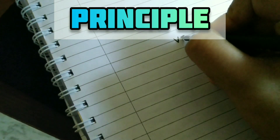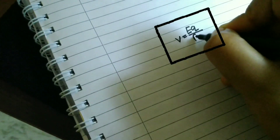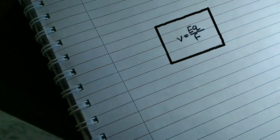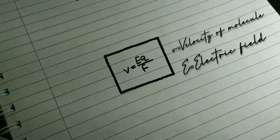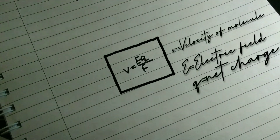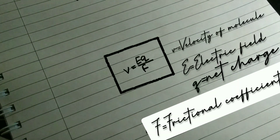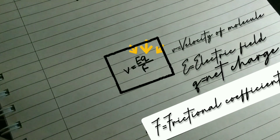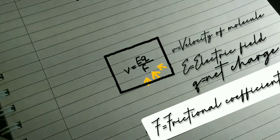In electrophoresis, the movement in a medium subjected to an electric field is represented by the equation: V = EQ/F, where V is the velocity of the molecule, E is the electric field, Q refers to the net charge on the molecule, and F represents the frictional coefficient, which depends on the mass and shape of the molecule. A charged particle moves at a velocity that depends directly on the electric field and charge, but inversely on the counteracting force generated by viscous drag.